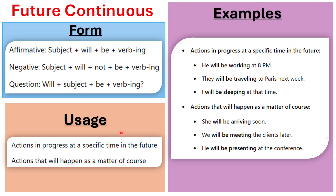What about the usage? When do we use the future continuous? We have two situations. The first is actions in progress at a specific time in the future — actions that are ongoing at a specific future time, meaning the action will be continuous at that point.